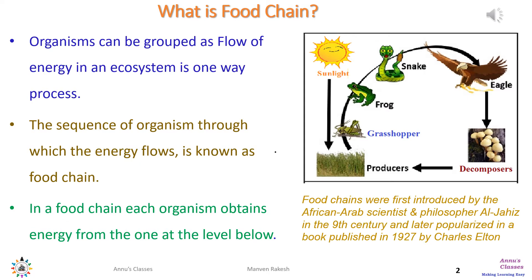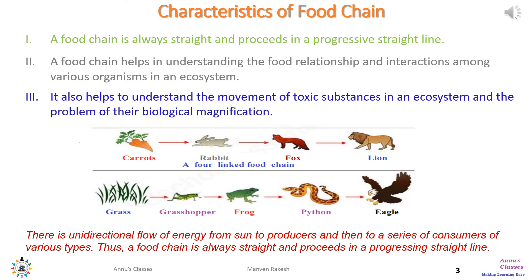In the ninth century, there is a unidirectional flow of energy from the sun to the producers, and then a series of consumers of various types. Thus, in a food chain, a straight and progressive line is always maintained. This food chain helps us in understanding food relationships and interactions among various organisms in an ecosystem — both for nutrition as well as for toxic agents, which we will understand later in biological magnification.